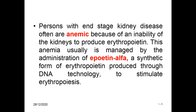In persons with end-stage kidney disease where kidney functions are impaired, they develop anemia due to the kidney's inability to produce erythropoietin. This anemia is managed not by giving iron, but by administration of epoetin alpha, which is a synthetic form of erythropoietin produced through DNA technology to stimulate erythropoiesis — the regulation of red blood cell production.